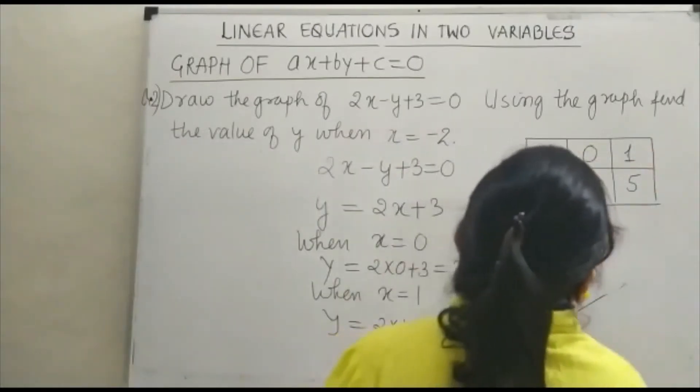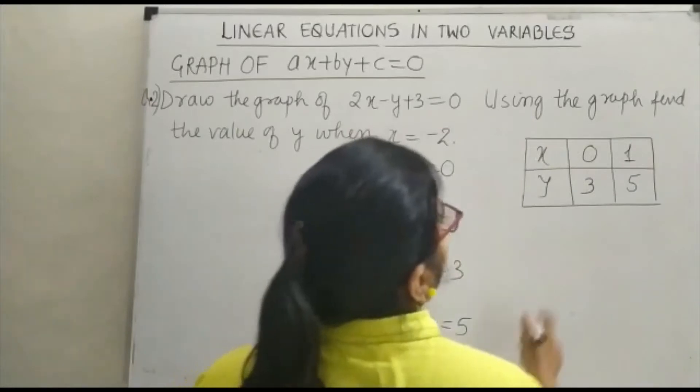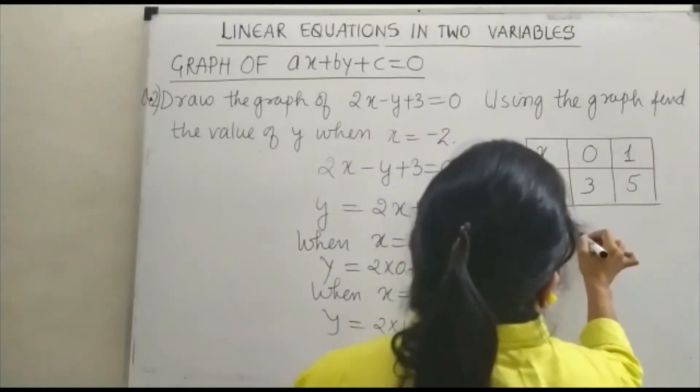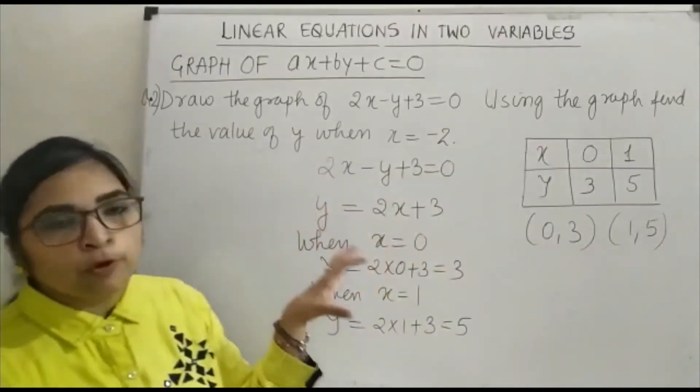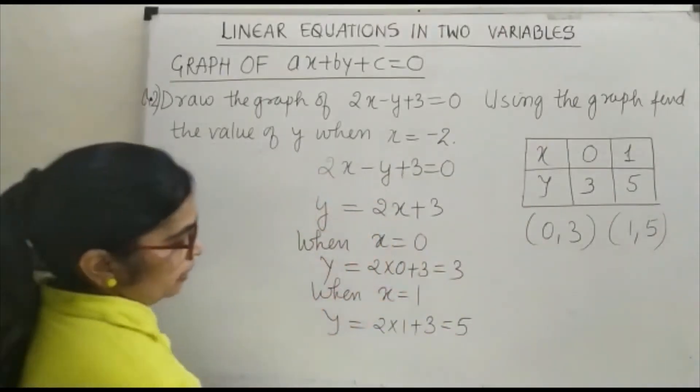So we got the 2 points. Those 2 points are (0, 3) and (1, 5). Now we have to plot these 2 points on the graph.